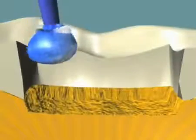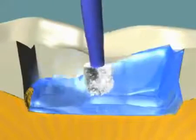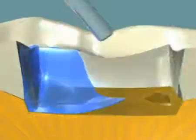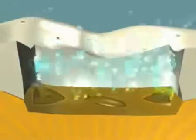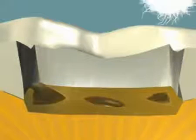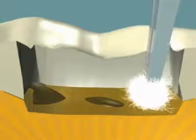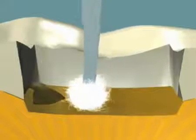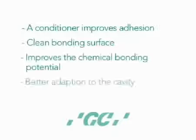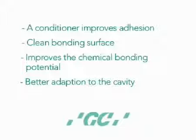Prior to placement of the glass ionomer, it is helpful to prepare the cavity surface by applying a polyacrylic acid conditioner. After 10 seconds, the conditioner is washed off, removing the smear layer and surface debris. Excess water is then removed without over-drying the surface. Using a conditioner improves adhesion in three ways: it creates a clean bonding surface, it improves the chemical bonding potential of the glass ionomer cement, and it alters the surface energy of the tooth so that the cement can wet and adapt the cavity more effectively.